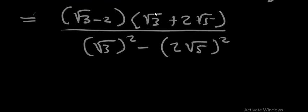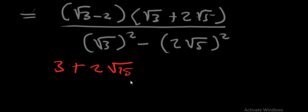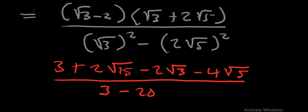For the numerator, we multiply term by term: square root 3 times square root 3 is 3; square root 3 times 2 square root 5 is plus 2 square root 15; negative 2 times square root 3 is negative 2 square root 3; negative 2 times 2 square root 5 is negative 4 square root 5. For the denominator, square root 3 squared is 3, and 2 square root 5 squared is 4 times 5 equals 20, so it is 3 minus 20, giving negative 17.